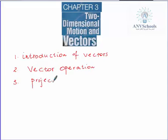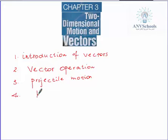We will define the meaning of projectile motion and solve some examples. The last lesson is about relative motion — the motion of one object relative to another. These two objects may be moving in the same direction or in opposite directions.